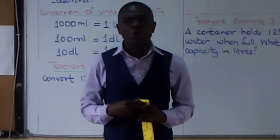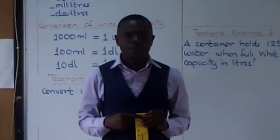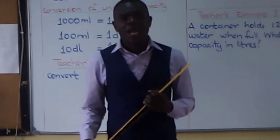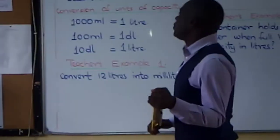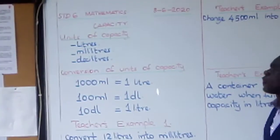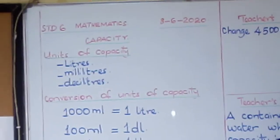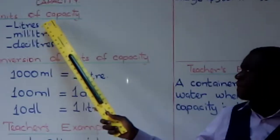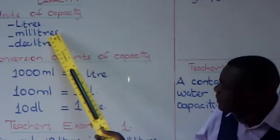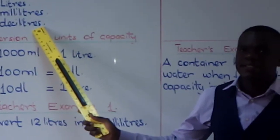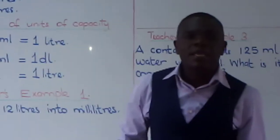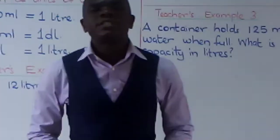Today we are learning about capacity. On my whiteboard I have written the units of capacity that we ought to learn in class six. Boys and girls, can you read these units together? Milliliters, deciliters — very good! These are the units of measuring capacity.